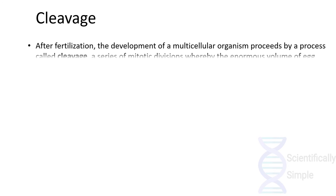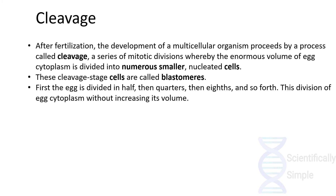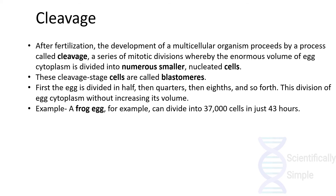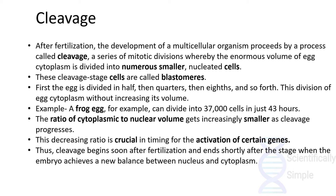After fertilization, the development of a multicellular organism proceeds by cleavage. Cleavage is a mitotic division that occurs after fertilization, dividing the cell into numerous smaller nucleated cells called blastomeres. The egg first divides in half, then into quarters, then eighths, and so on. This division occurs at a very fast rate — for example, in a frog it can produce up to 37,000 cells in just 43 hours. The ratio of cytoplasmic content to nuclear volume gets increasingly smaller as cleavage progresses, because overall cell size remains the same while nuclear content increases.